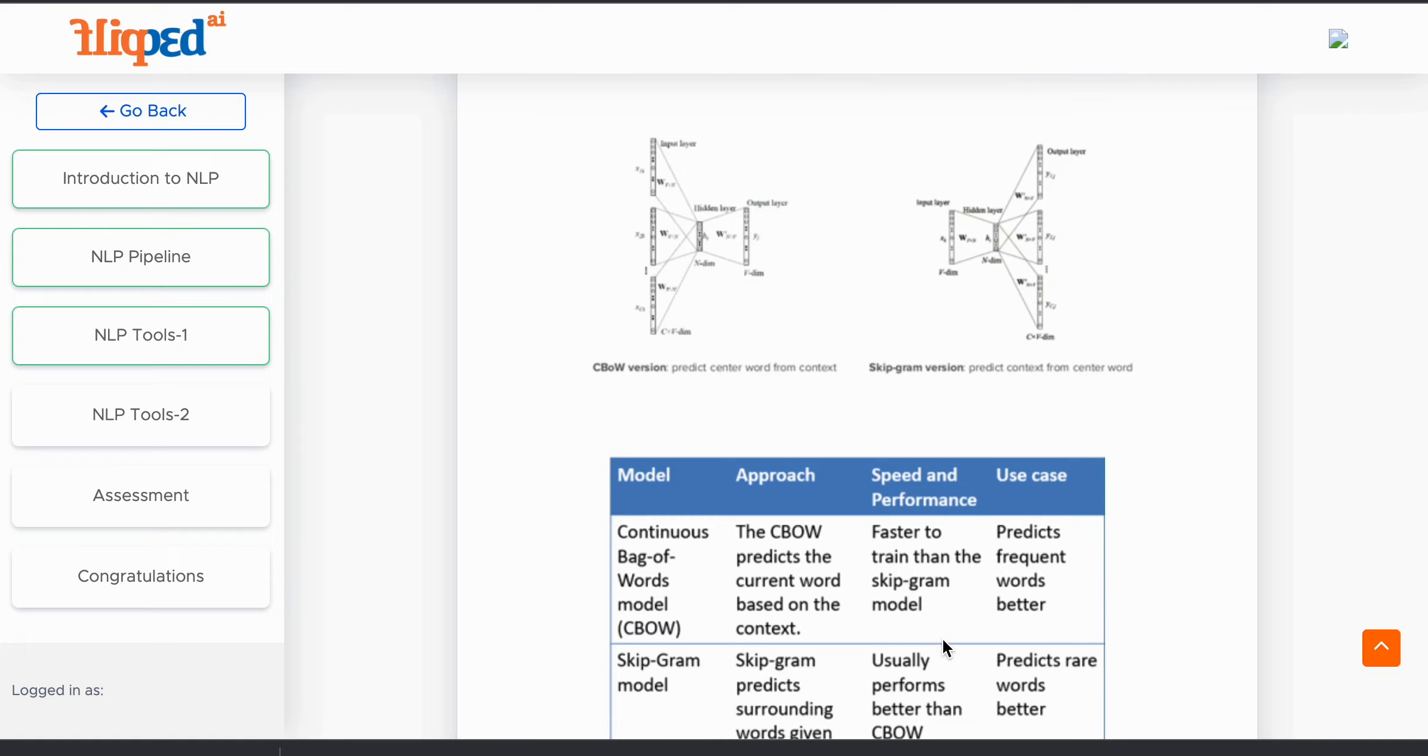Word2Vec can be built in two ways. One is continuous bag of words model, and the other one is skip-gram. In continuous bag of words model, the distributed representations of context are combined to predict the word in the middle, while in the skip-gram model, the distributed representation of the input word is used to predict the context.